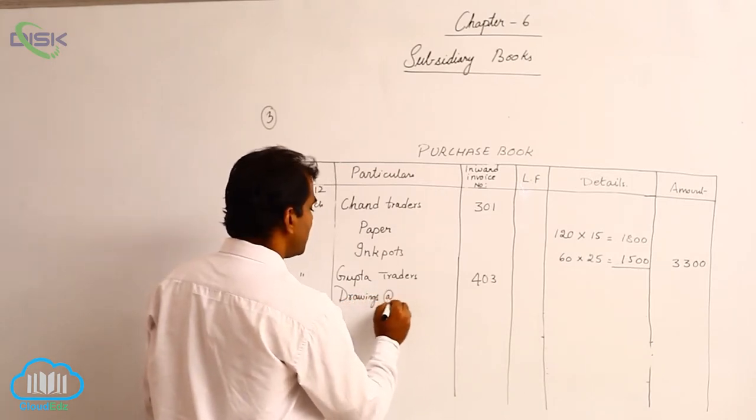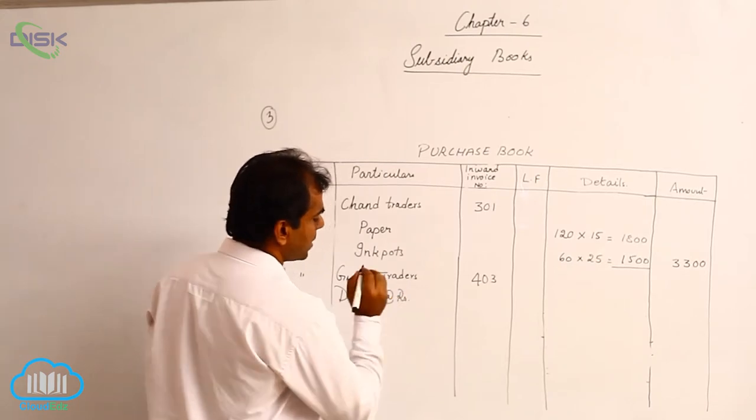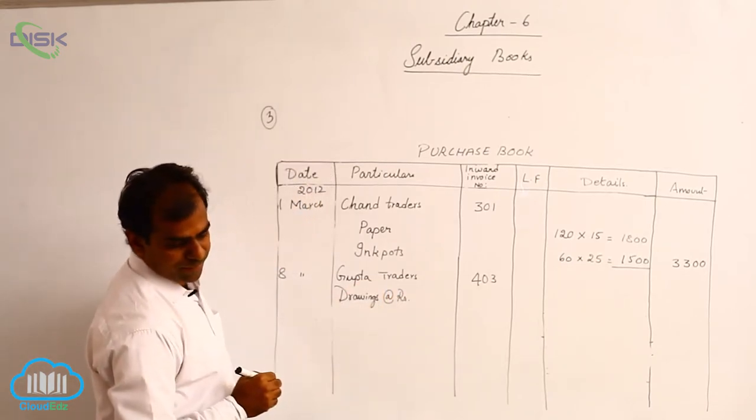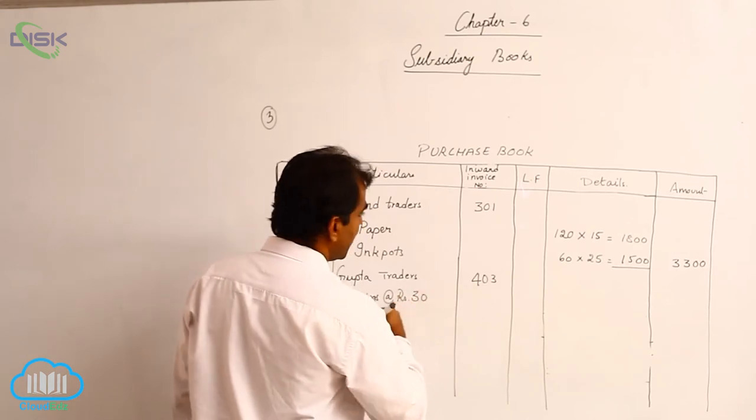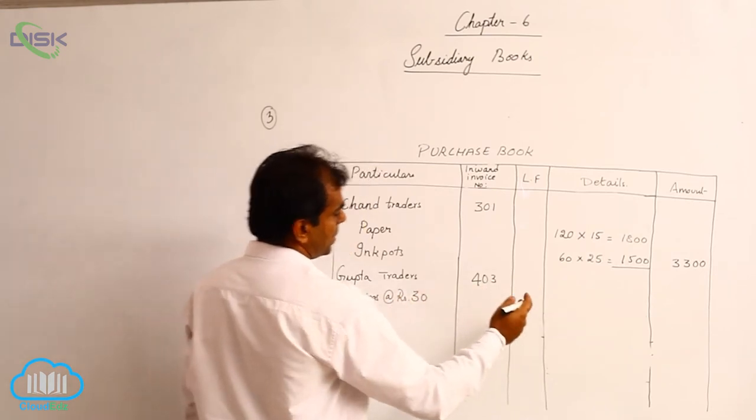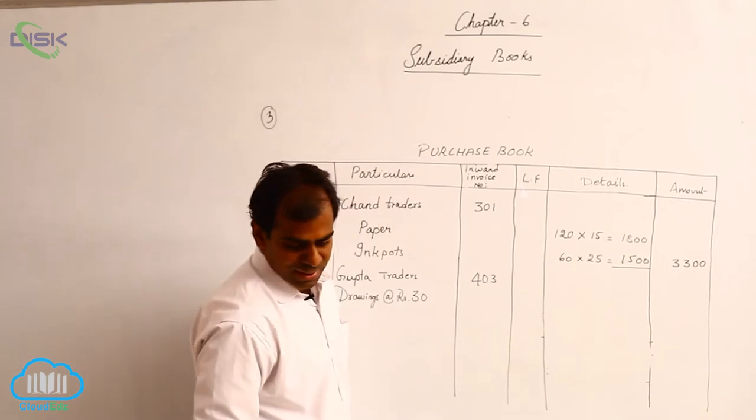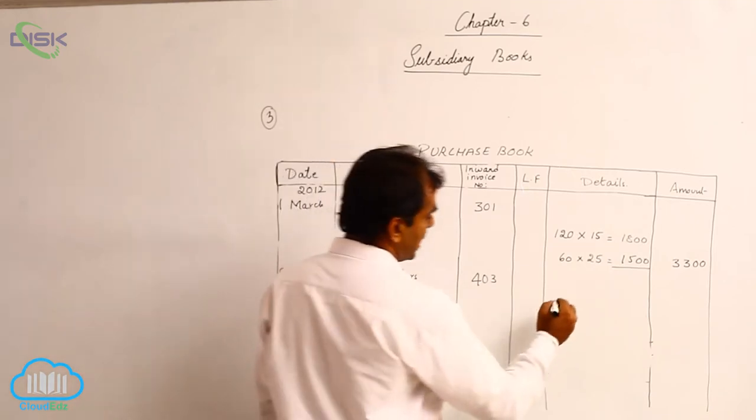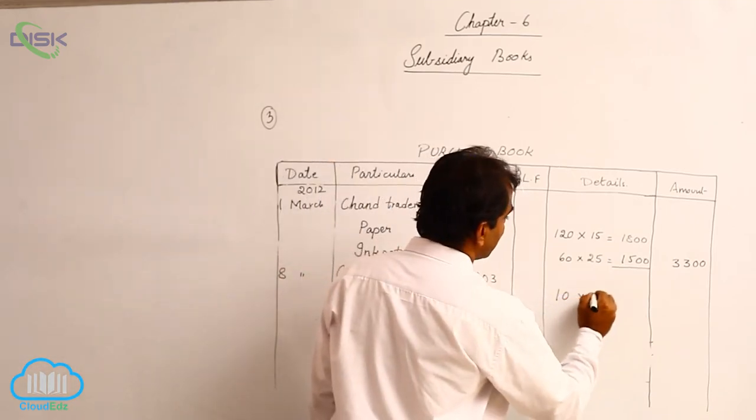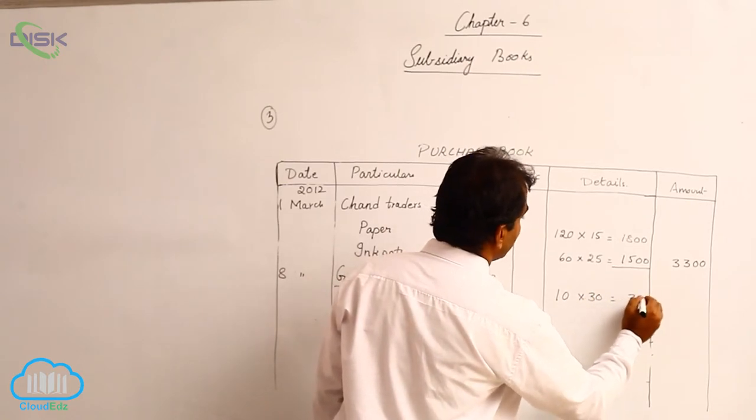Drawing boards. You can mention if you want at the rate rupees 30. So here in this column you can mention how many drawing boards there are: 10 boards at the rate 30, making it 300.